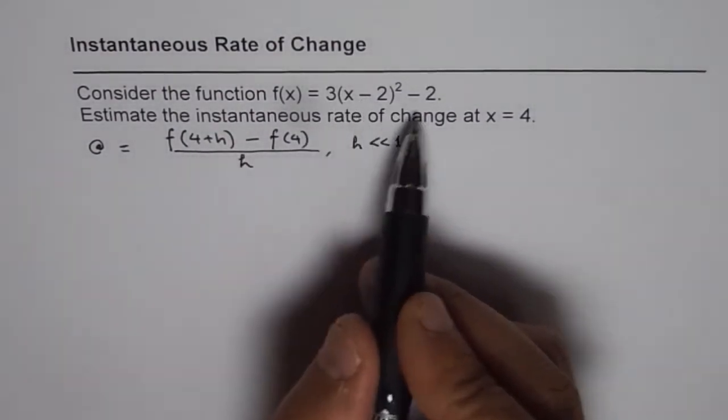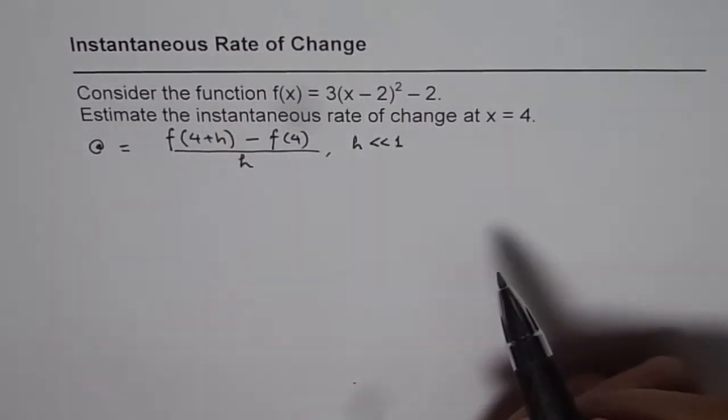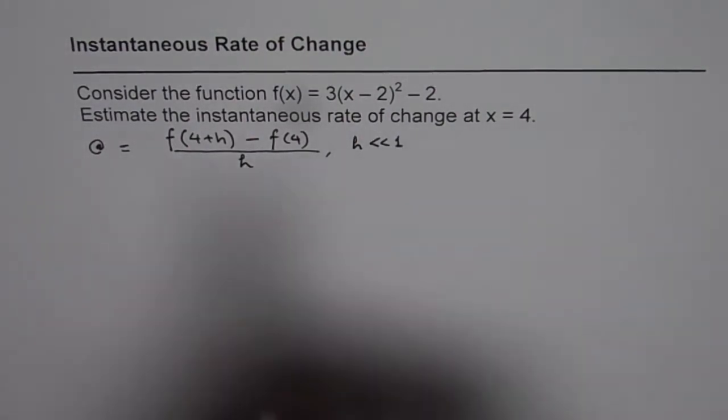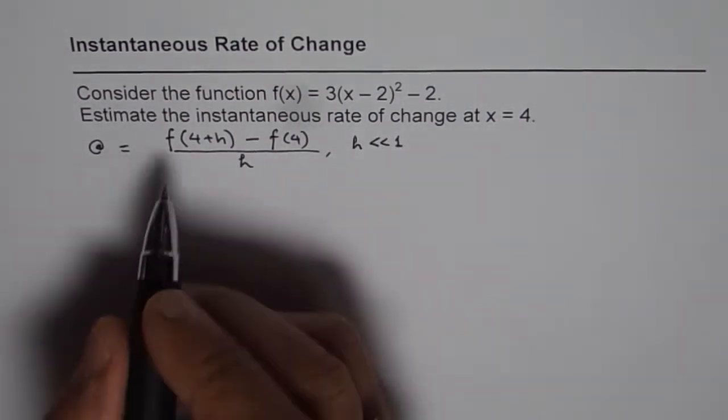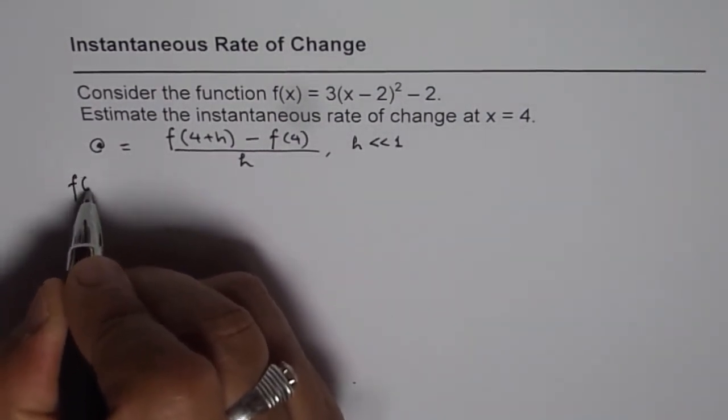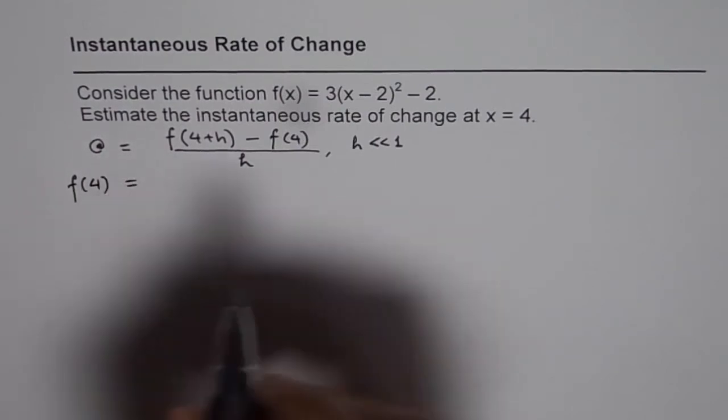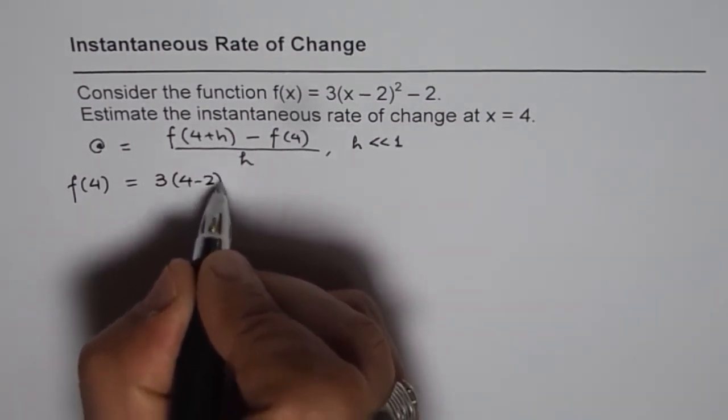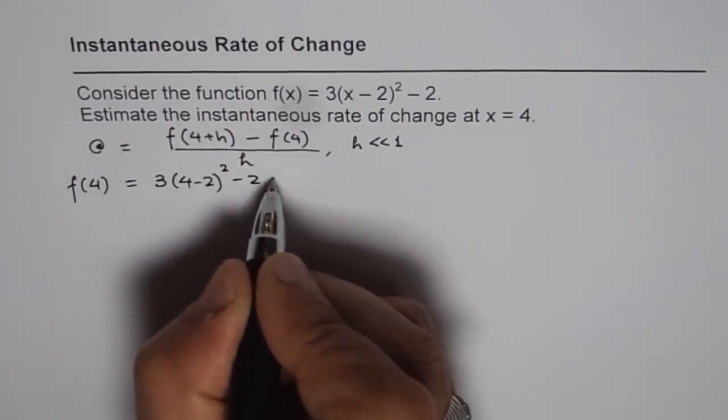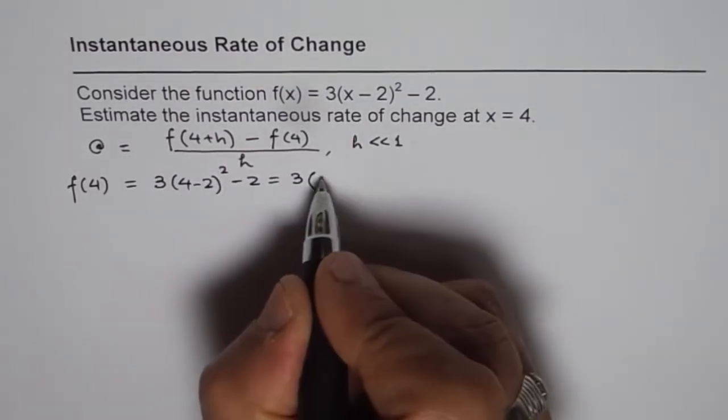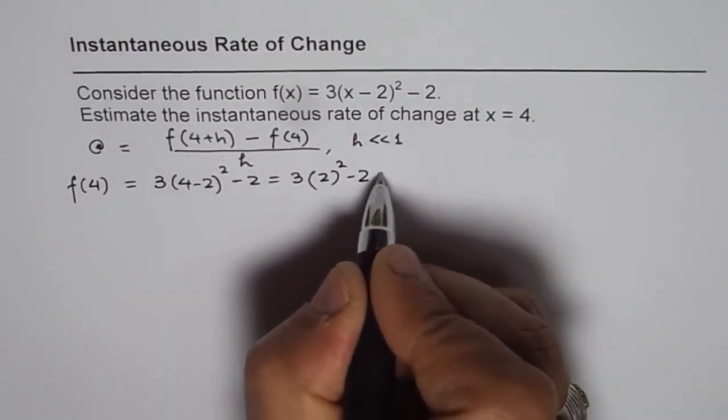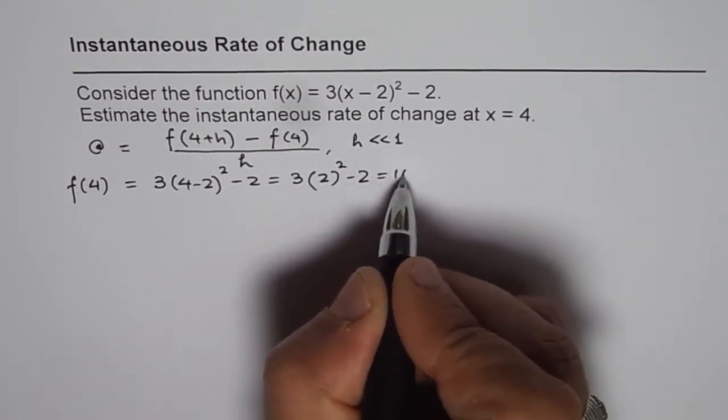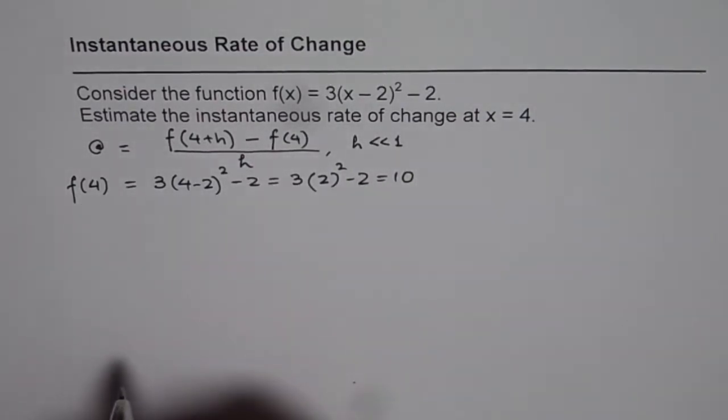Now when students substitute the value they do a lot of calculation mistakes. Here is an alternate way of doing the same thing. I will appreciate if you could write them separately. First find what is f(4). So f(4) will be 3(4 - 2)² - 2 = 3(2)² - 2 = 12 - 2 = 10. So f(4) is 10 for you.